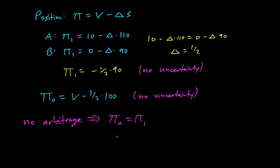And so what does that mean? That means that V minus 50 equals negative 45. In other words, V equals 5.